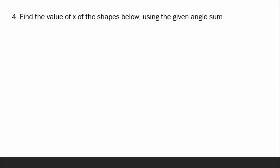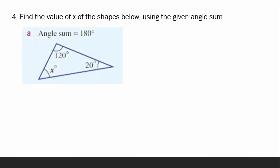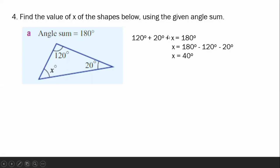Number four: find the value of X of the shapes below using the given angle sum. For letter A, the angle sum is 180 degrees. The total measurement of a triangle is 180 degrees. So, 120 plus 20 plus X equals 180 degrees. Therefore, X is equal to 180 minus 120 minus 20, which is 40 degrees.